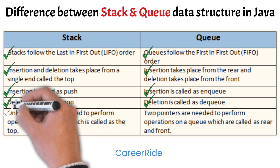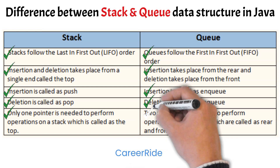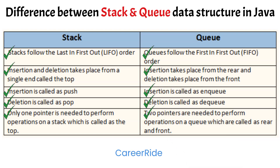In a stack, only one pointer is needed to perform operations, which is called the top. Whereas in a queue, two pointers are needed to perform operations, which are called rear and front.